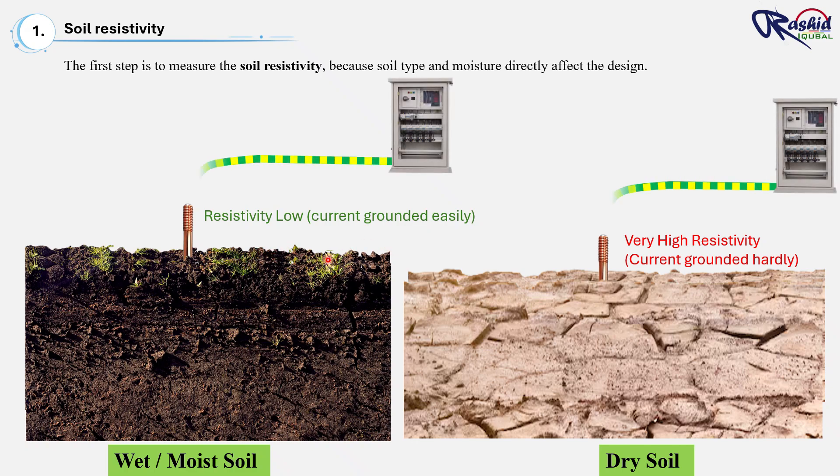Here you can see the difference. In wet soil, leakage current from the electrical panel quickly flows into the ground because the resistance is low. But in dry or sandy soil, the current moves very slowly since the ground resistance is high. That's why engineers always prefer to install earth rods in moist soil layers or near the water level where the moisture level remains stable throughout the year.